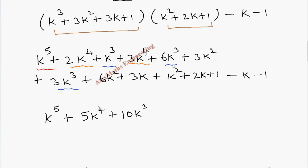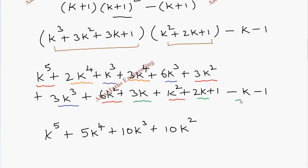Coming to the square terms, we have 3k^2, 6k^2, and k^2. Once again adding this we get plus 10k^2. And k terms: 3k, 2k, and also minus k, so totally it is 4k. So plus 4k. And these two numbers we can cancel: plus 1 and minus 1.